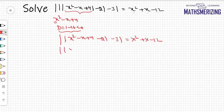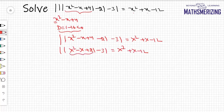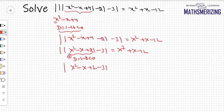This simplifies to mod of (x² - x + 2) - 3 equals x² + x - 12. For x² - x + 2, the discriminant d is 1 - 8, which is again less than 0, so it is always positive. Therefore mod of (x² - x + 2) is simply x² - x + 2.